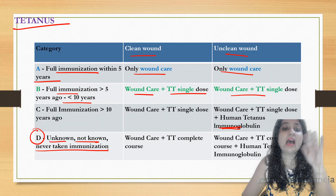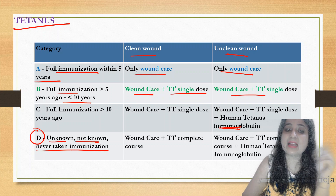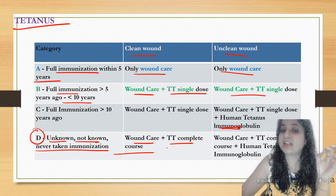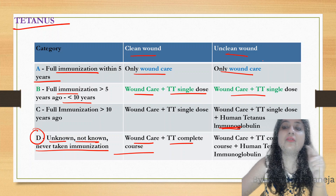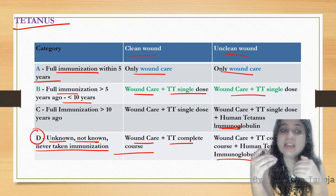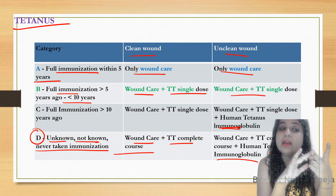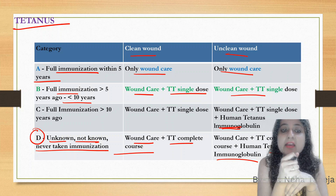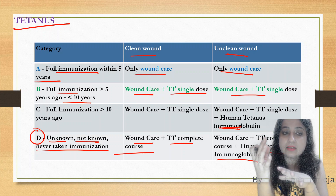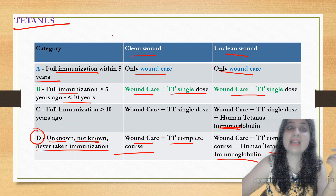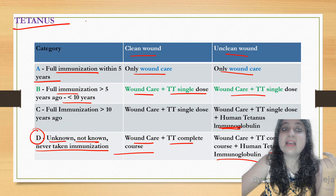Category D: immunization status unknown or person never immunized — for clean wound: wound care plus a complete course of tetanus toxoid; for unclean wound: add immunoglobulin as well. Immunoglobulin is added in Category C (unclean wound) and Category D (unknown status). Full immunization for tetanus is given at six, ten, and fourteen weeks as Penta 1, Penta 2, and Penta 3.